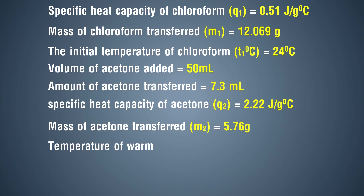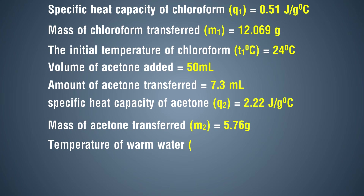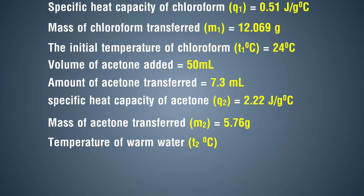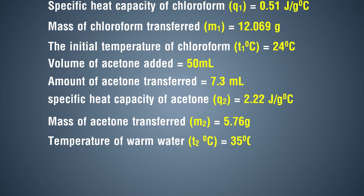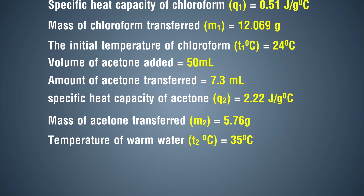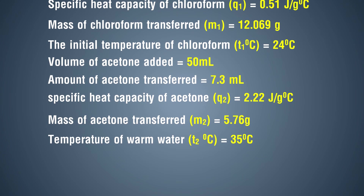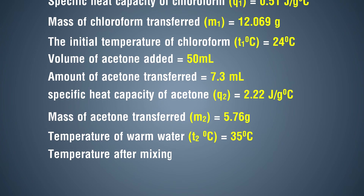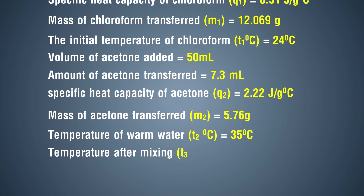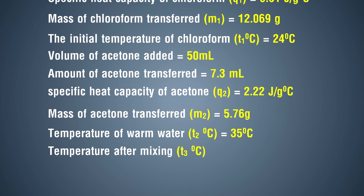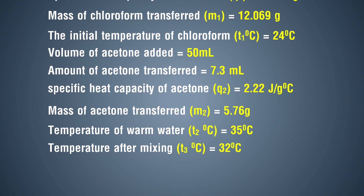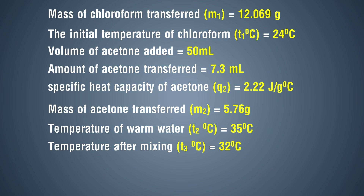Volume of acetone added = 50 milliliters. Amount of acetone transferred = 7.3 milliliters. Specific heat capacity of acetone Q2 = 2.22 joules per gram degree Celsius. Mass of acetone transferred M2 = 5.76 grams. Temperature of acetone T2 = 35 degree Celsius. Temperature after mixing T3 = 72 degree Celsius.